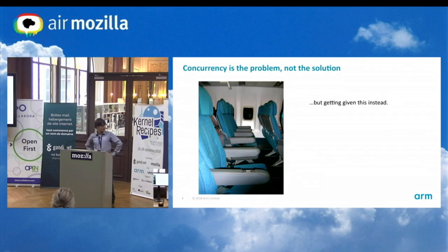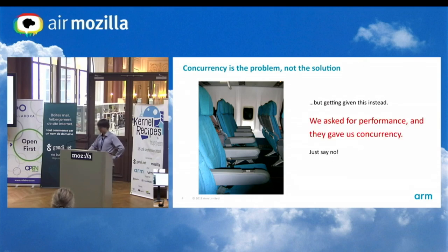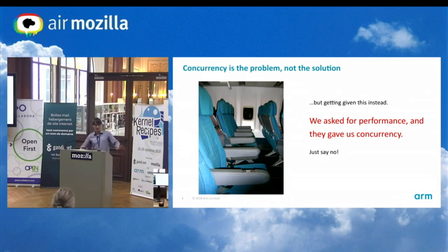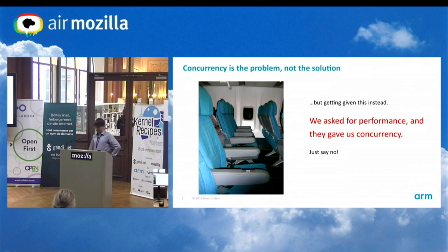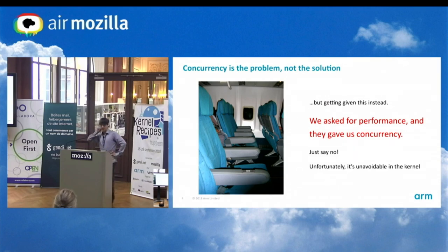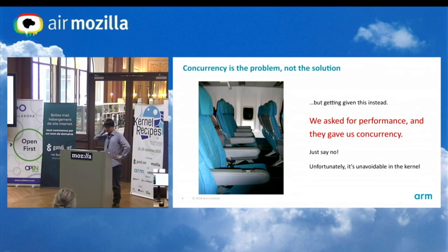I think we should be complaining more about it, because we asked for performance — which is the big seat — and instead they gave us concurrency. So if you can, just say no. Don't do it. Unfortunately, in the kernel it's unavoidable — we really can't avoid this, we have to deal with concurrency. It's all over the place, and this ship has long sailed.